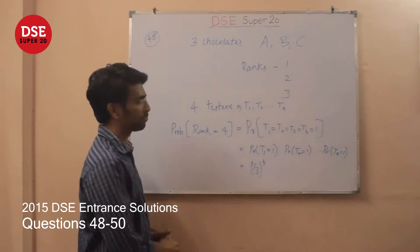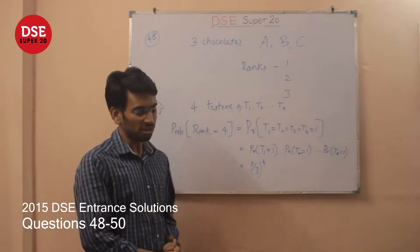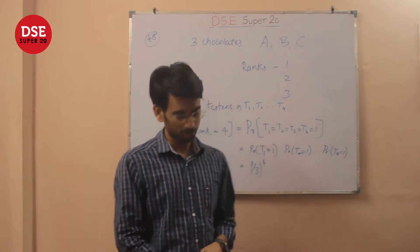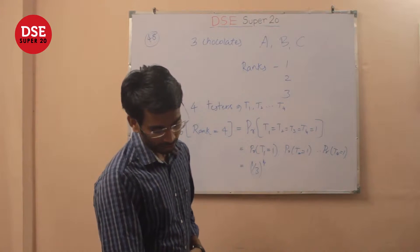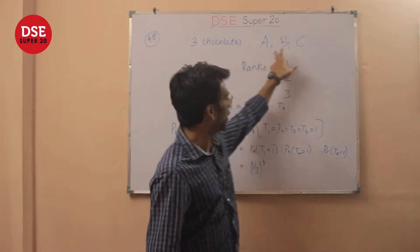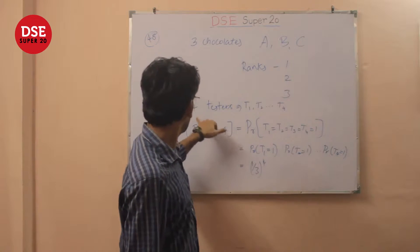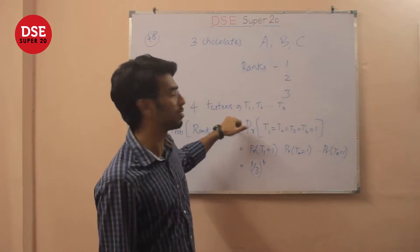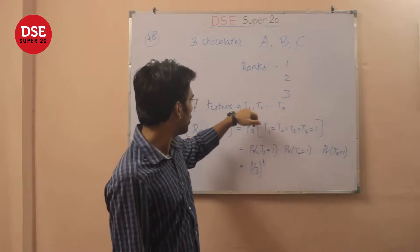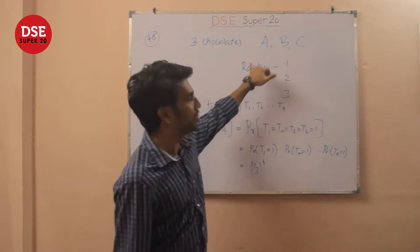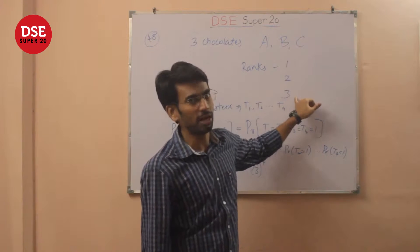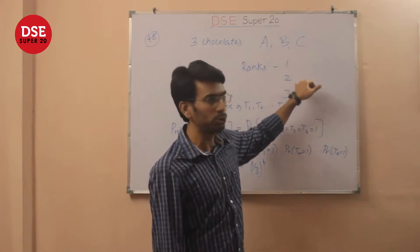Let's come to question 48. This is a rather simple probability question. Given that there are three brands of chocolates A, B, and C, and there are four testers, T1 to T4. Each tester tastes these chocolates and assigns ranks. The ranks can be 1, 2, or 3.